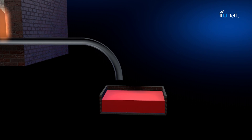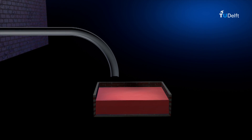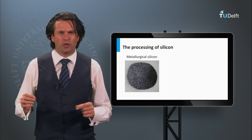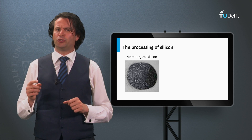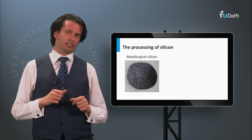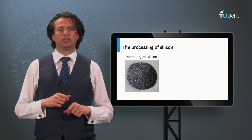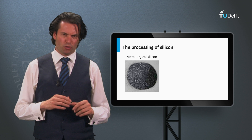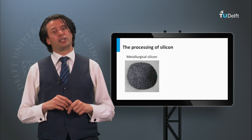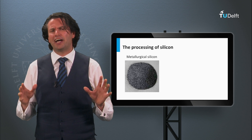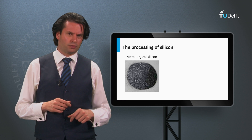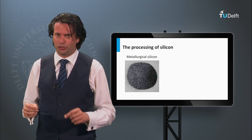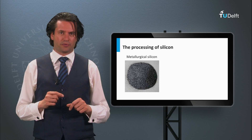The purity of metallurgical silicon is around 98 to 99%. About 70% of worldwide produced metallurgical silicon is used in the aluminum casting industry to make aluminum-silicon alloy parts used in automotive engine blocks. The other 30% is used to make chemical products like silicones. Only around 1% of metallurgical silicon is used to make electronic grade silicon.